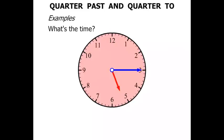Terrific! Let's look at some examples. What's the time? So here's a clock here. The first thing to do is have a look at the minutes hand. It's pointing at the three. That indicates quarter past.